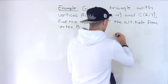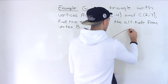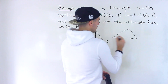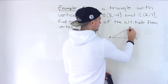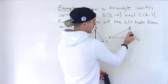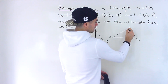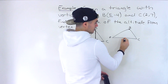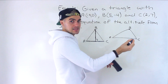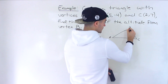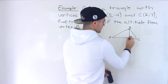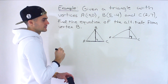Let's draw another triangle — A, B, C. If we're finding the altitude from vertex B, the median would go to the midpoint somewhere on AC, but the altitude would actually go straight down because it has to be 90 degrees.